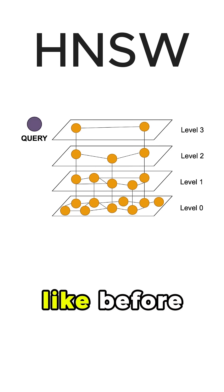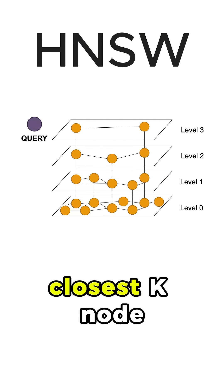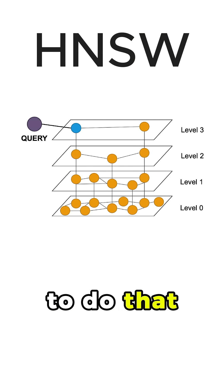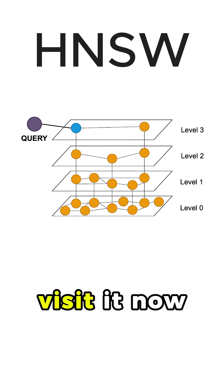Suppose we have a query, just like before, and we want to find the closest k nodes. To do that, we again select a random entry point in the upper level of this graph and then we visit it.